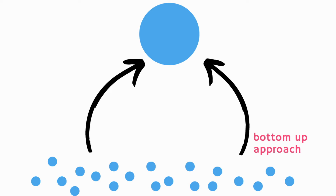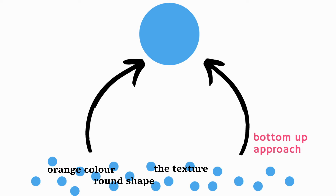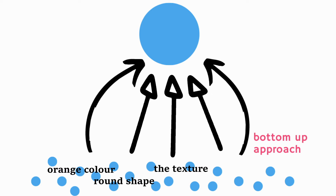Inductive reasoning is the bottom-up approach: imagine you look at a fruit and first notice all the small specific details — it's orange in color, it's round, it has a certain texture, it has an outer skin — and then from all those specific observations you reach the general conclusion that it is an orange. So you are starting from specific things and going to a general conclusion.